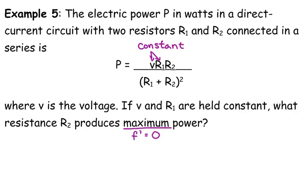So maximum power, I need to take the derivative of this function. R2 is my only variable. So P prime is equal to, we need to use the quotient rule, because we do have variables in the top and the bottom.